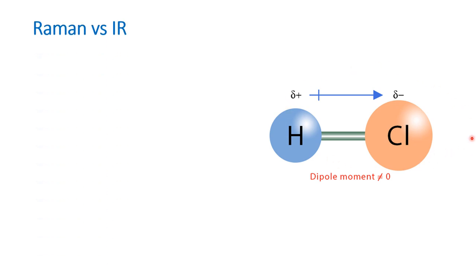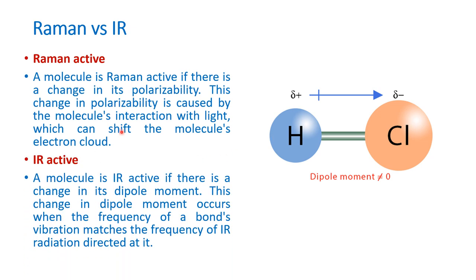I have put the HCl molecule here as a common example to understand IR and Raman active vibration — in other words, when do we say a molecule is Raman active or IR active. Basically, what is the principle of both these spectroscopic techniques? In case of Raman, it is based on scattering of light. IR spectroscopy is based on absorption of light. In case of Raman spectroscopy, it is about polarizability of the molecule. In case of IR, it is about the dipole moment of the molecule. In both cases, we are studying molecular vibrations and what happens to them when radiation falls on them.